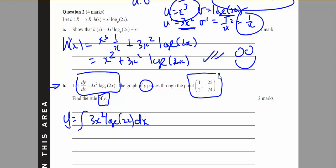So I'm going to use from up here that d/dx of x cubed log base e of 2x equals the derivative which is 3x squared log base e of 2x plus x squared.